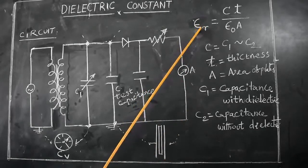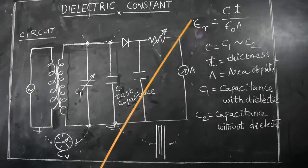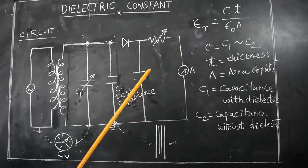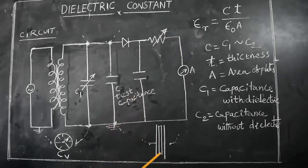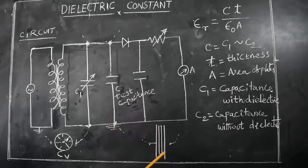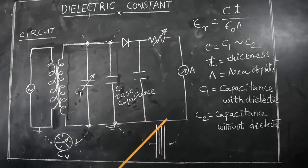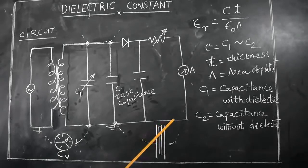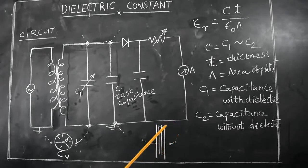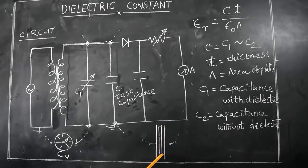The dielectric constant of any dielectric material — here we are measuring solid dielectric materials. Examples include glass, ebonite, plastic, and wooden plate. Various types of dielectric materials are taken here.